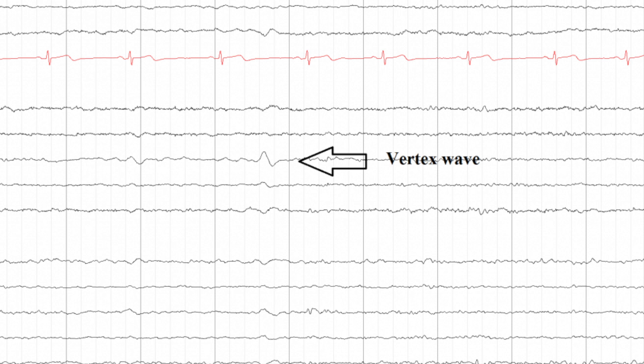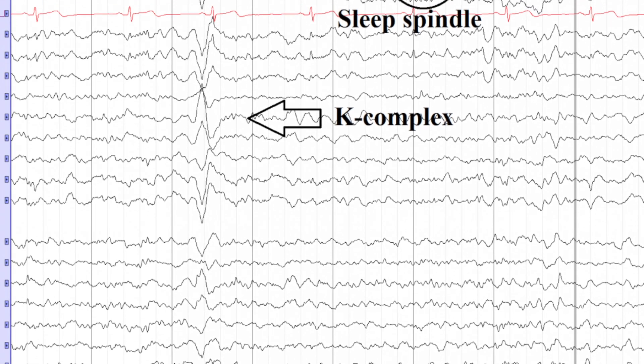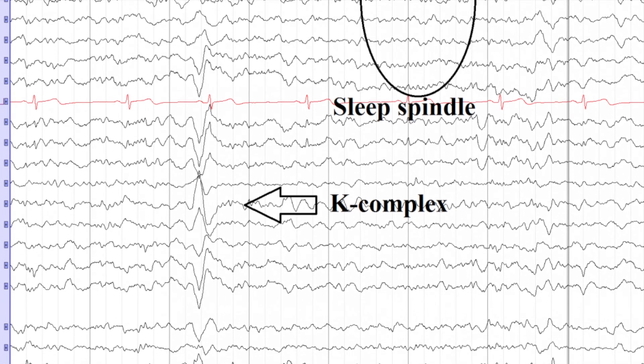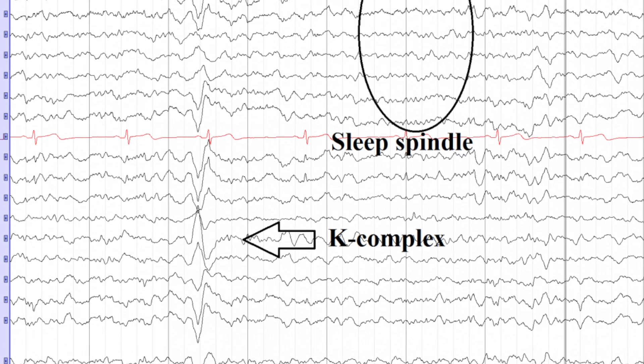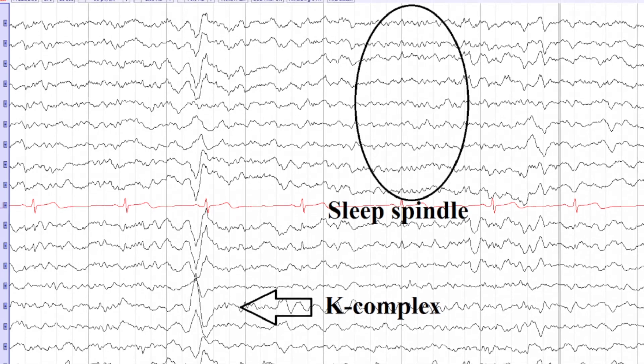Vertex sharp transients, or V-waves, are maximum at the vertex. Like K-complexes, they are present during stage 1 sleep. They are narrower and more focal than K-complexes. Unlike K-complexes, vertex waves are not associated with sleep spindles. In children and young adults, vertex waves could be sharp and occur in a repetitive run, and one should not confuse them with an epileptic discharge. K-complexes are present in stage 2 sleep; they have high amplitude and long duration, are diphasic or polyphasic, and are often associated with sleep spindles. The common location of K-complexes is the frontocentral region, with maximum at Cz or Fz.